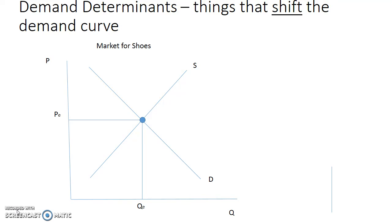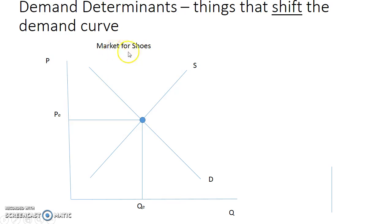Demand determinants are things that shift the demand curve. In the past, we've talked about a movement along the demand curve — a change in quantity demanded. If you look here at this graph, we have our title, which is so important: our market for shoes. Because we've got our title, we only need to put a P for the price of shoes and a Q for the quantity of shoes on the horizontal and vertical axes.